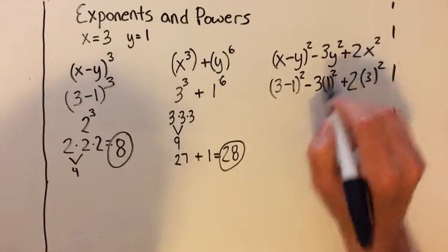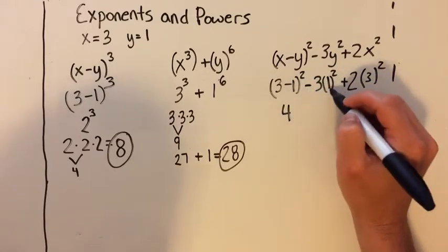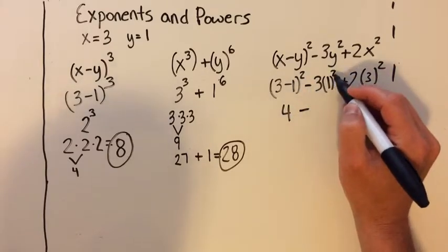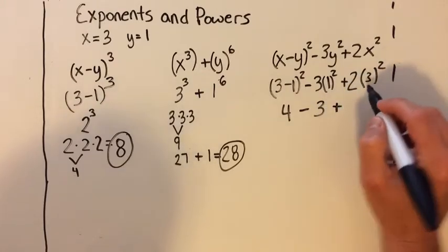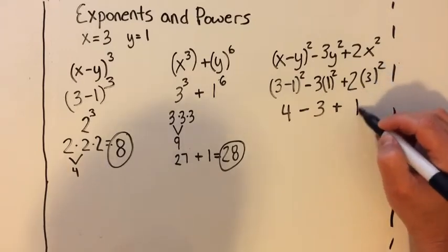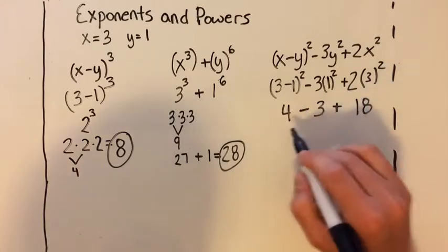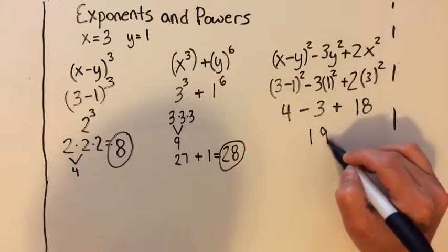So this right here is 2, and 2 times 2—2 squared is 4. 1 squared is 1 times 3, which is 3, and 3 squared is 9 times 2 is 18. So 4 minus 3 is 1, and 1 plus 18 is 19.